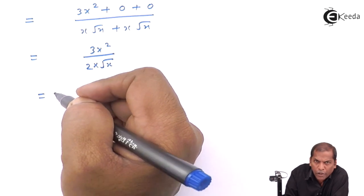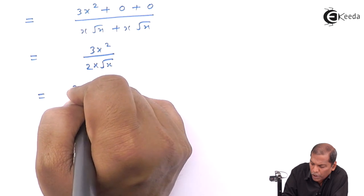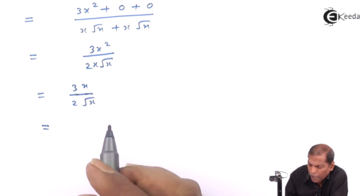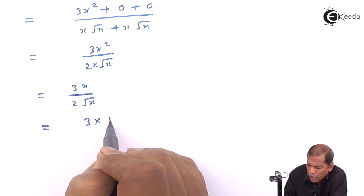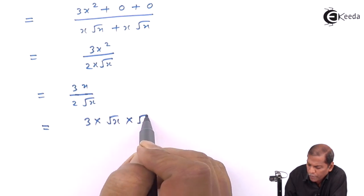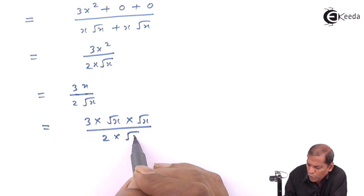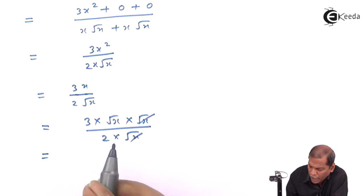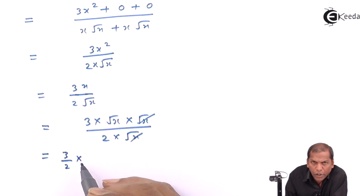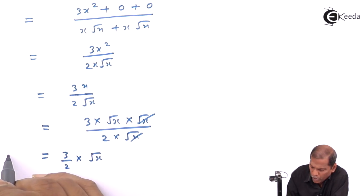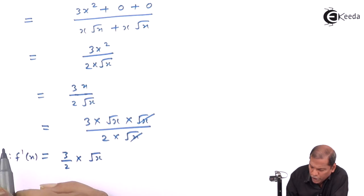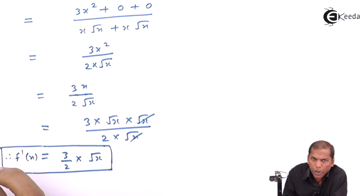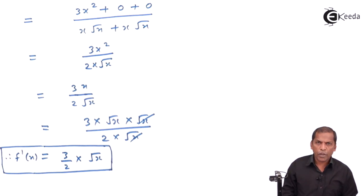Now we cancel x from numerator and denominator, leaving 3x upon 2 root x. In the numerator we split x as root x into root x, giving 3 root x into root x upon 2 root x. We cancel root x from numerator and denominator, so finally f'(x) is equal to 3 upon 2 into root x. This is the required solution for the given problem. Thank you.